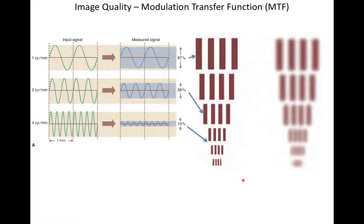If my imaging system attenuates low frequencies very little — say 90% of the signal goes through — the output still shows this fundamental frequency with maximum contrast between the trough and peak. As we go to higher frequencies, the system may attenuate those by as much as 87–90%, such that at that higher frequency, when you look at the output, you can't even determine that there's an oscillation anymore. It's crushed down into a mean value.